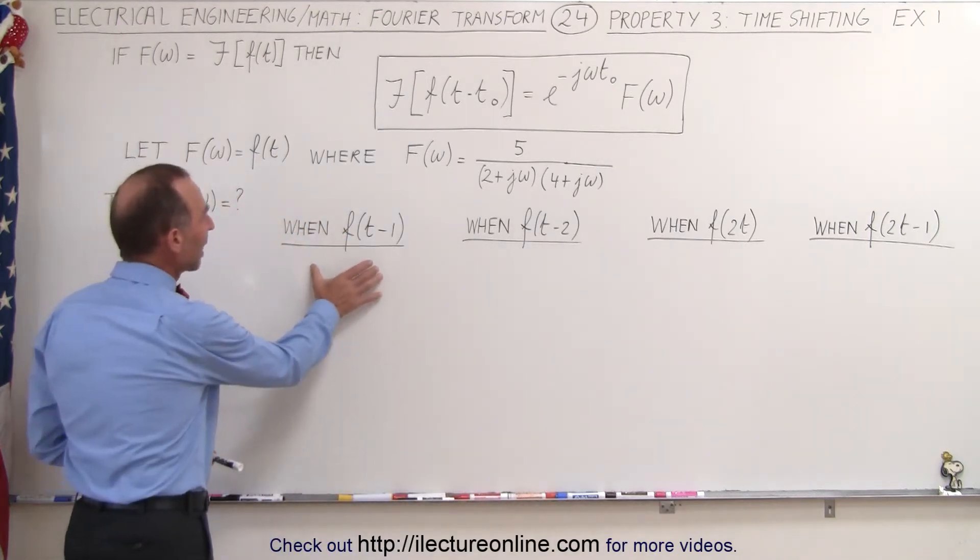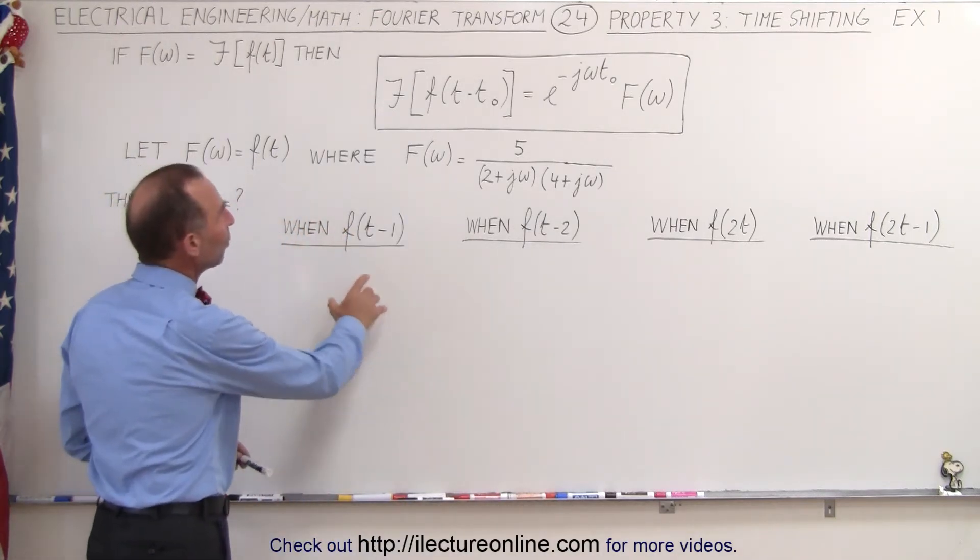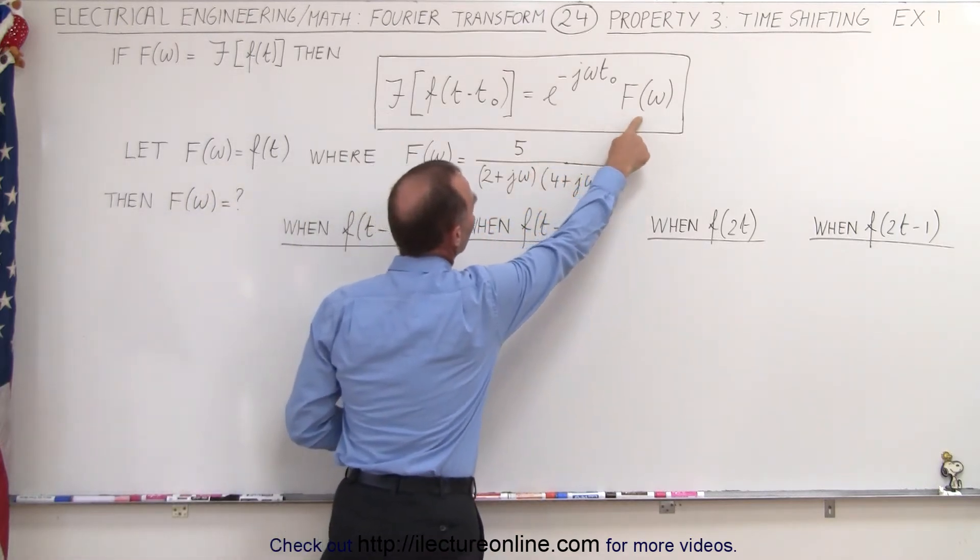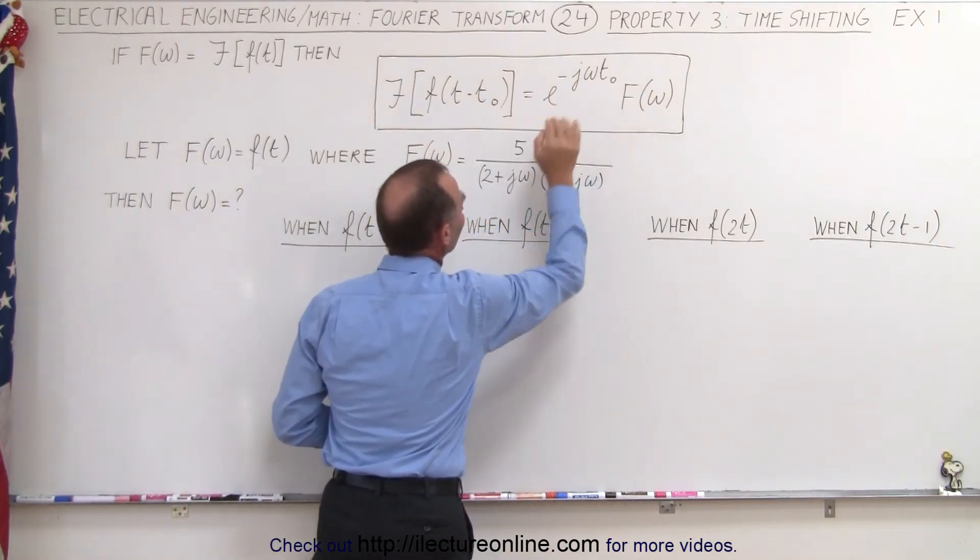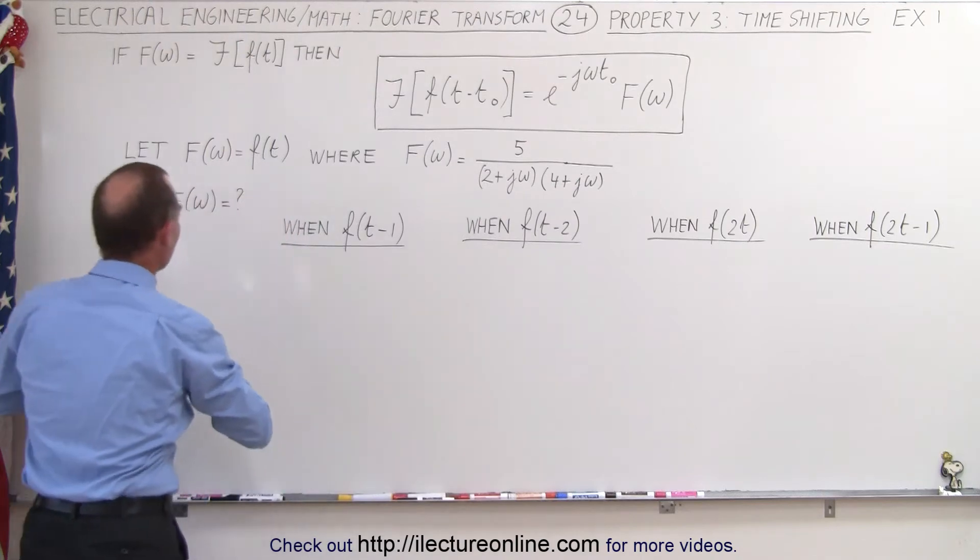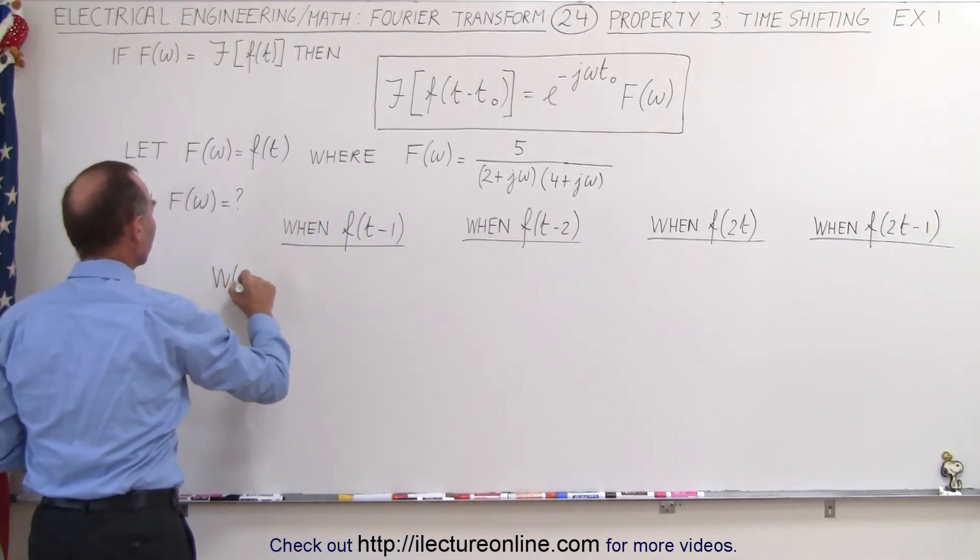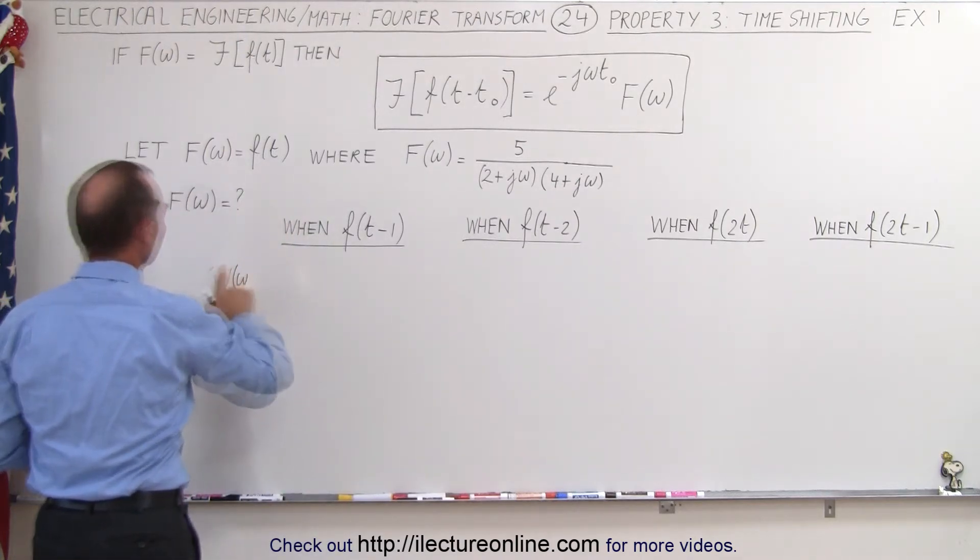Well, first of all, when we have the time shift like this, we just have to multiply the Fourier transform we had before with this right here. So then that means that the Fourier transform in this case, let's write it like this,